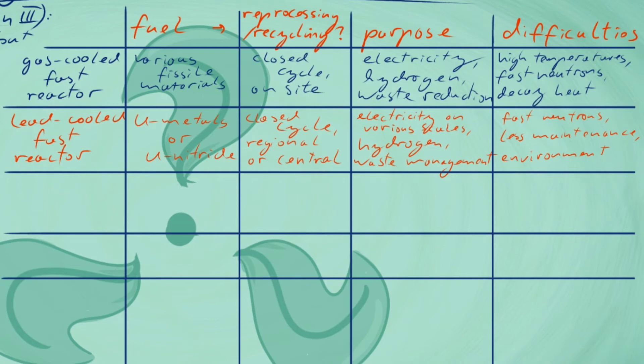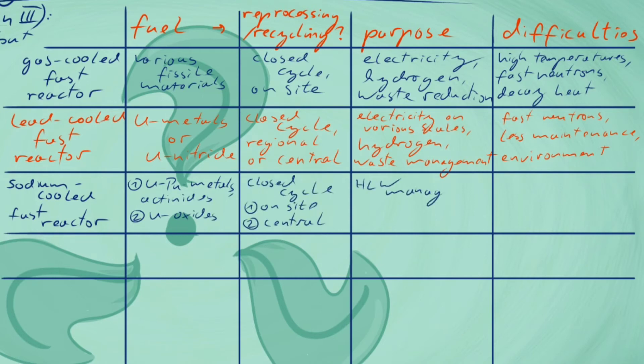Sodium-cooled fast reactors build on many years of experience. They work with a lower temperature of 550 degrees Celsius, and for fuel, they could use either uranium-plutonium metals with actinides or standard-enriched fuel.